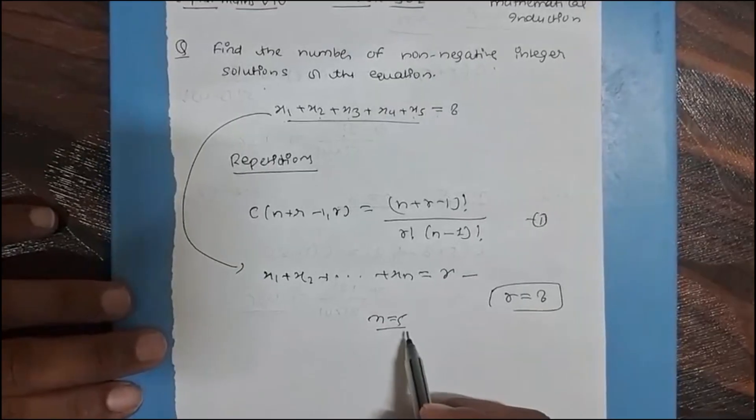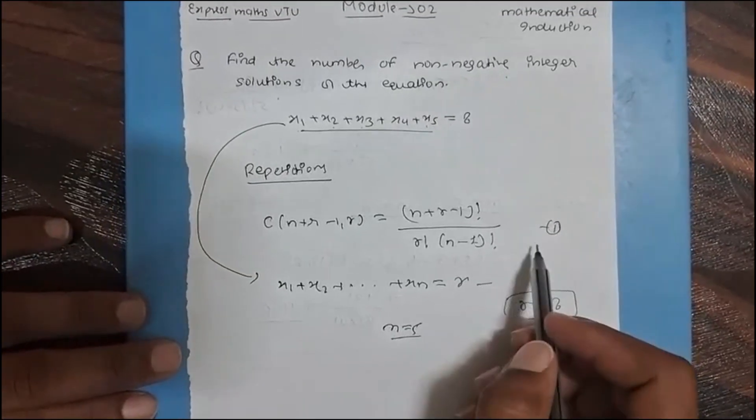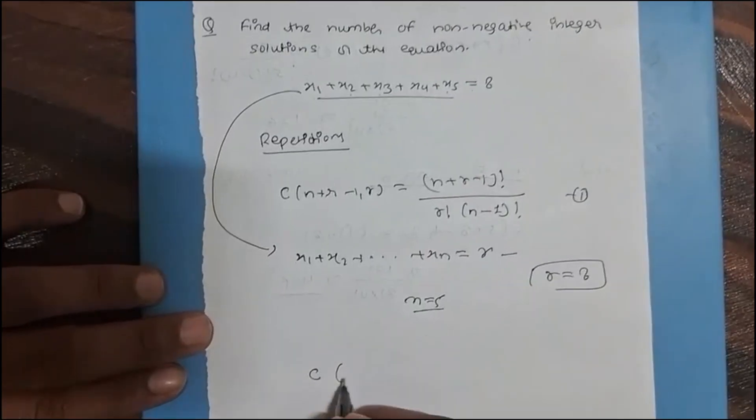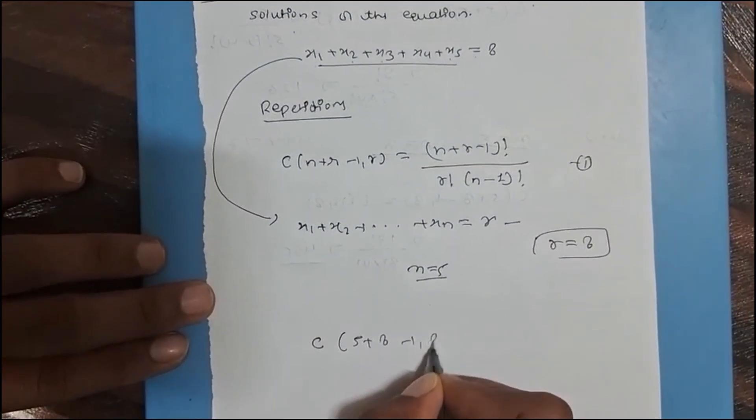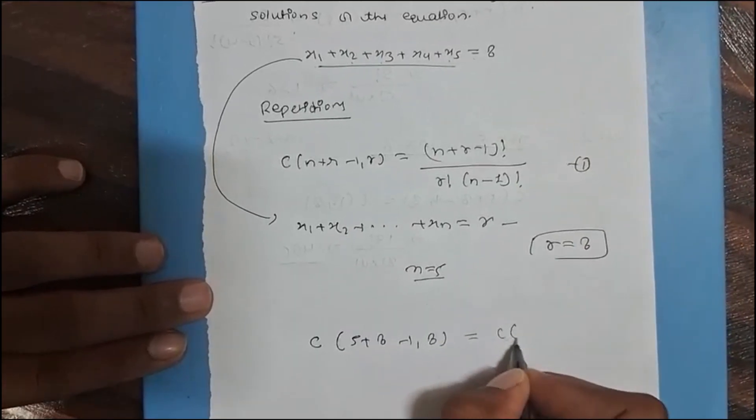So put the value of n = 5 and r = 8 in this first equation, so the equation becomes C(5+8-1, 8) = C(12, 8). So we have to calculate this one.